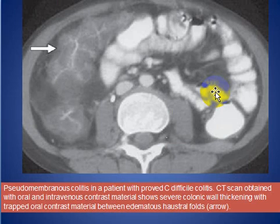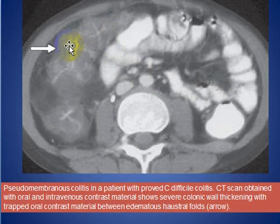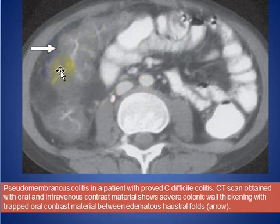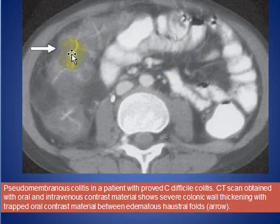Here is a patient with pseudomembranous colitis due to Clostridium difficile infection. The CT scan was obtained after oral and IV contrast material, showing marked wall thickening with oral contrast trapped between the edematous haustral folds.